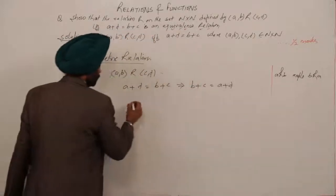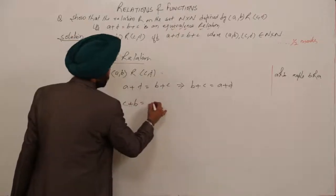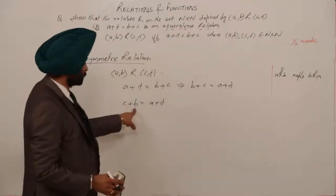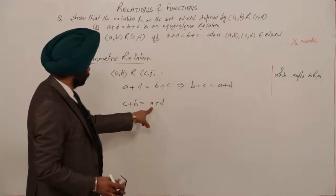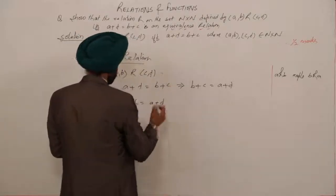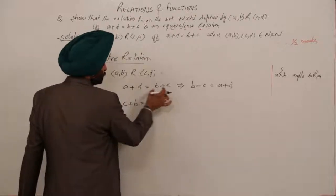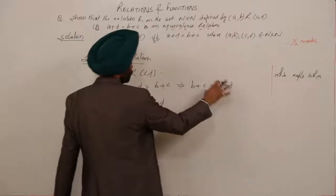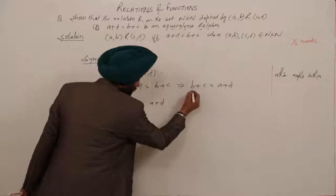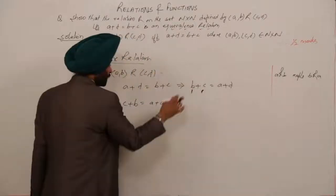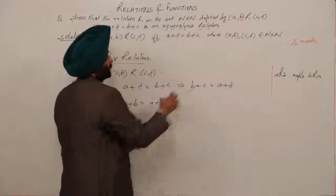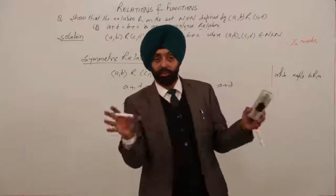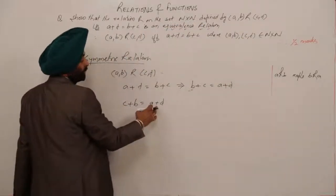Now I rewrite this as c+b = a+d. Since we are in N×N, b+c = c+b (addition is commutative — for example, 2+3 = 3+2, result is the same). So c+b = a+d.